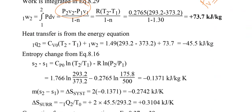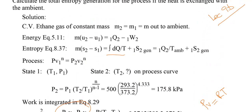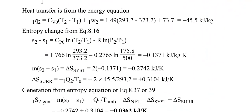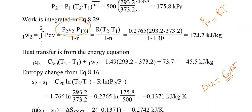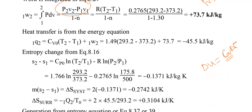The heat transfer Q equals the change in internal energy plus work done. The internal energy change is ΔU = Cv·ΔT. For ethane, Cv = 1.49 kJ/kg·K. So Q = 1.49 × (T2 - T1) + 73.7, which gives Q = -45.5 kJ/kg. The negative sign means heat was lost from the system.